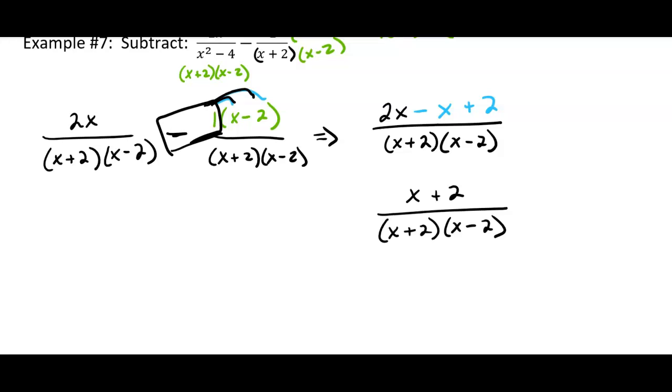This is exciting, because it looks like something's going to happen this time. So in the numerator, I have a factor of x plus 2, and in the denominator, I have a factor of x plus 2. So those get to cancel.